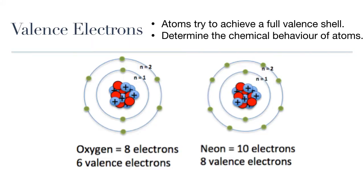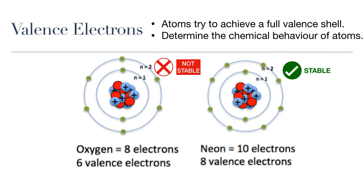Last lesson we discussed that the main goal of all atoms is stability, and that stability means having a completely filled valence shell. Neon, for example, has a completely filled valence shell with 8 electrons and does not need to undergo any chemical reactions to fill it. Oxygen, on the other hand, has 6 electrons on its valence shell, so it needs 2 more. Oxygen is not stable, but it can gain stability by either gaining those 2 electrons from other atoms or by sharing some of the ones it has.